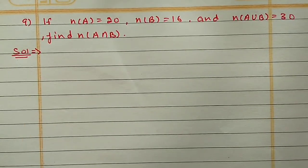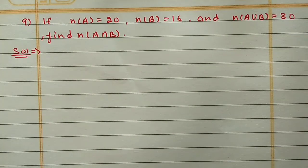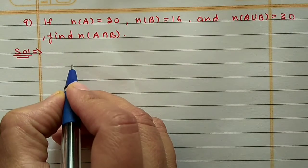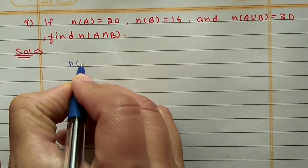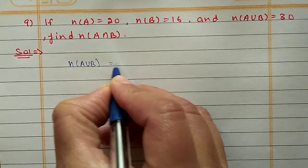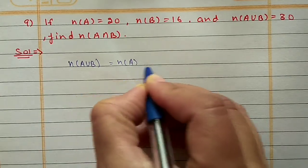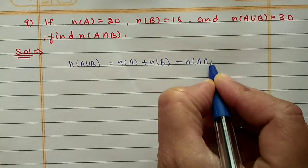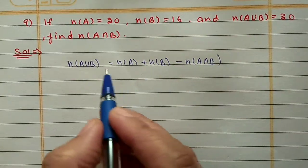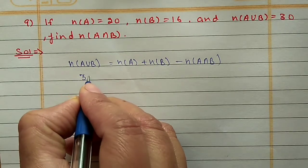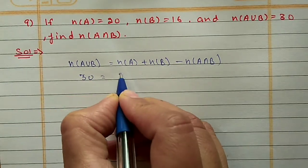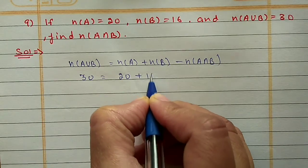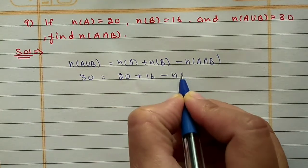Question 9: If N(A) = 20, N(B) = 16, and N(A∪B) = 30, find N(A∩B). We will use the first property: N(A∪B) = N(A) + N(B) - N(A∩B). Substituting values: N(A∪B) is 30, N(A) is 20, N(B) is 16, and N(A∩B) is what we have to find.